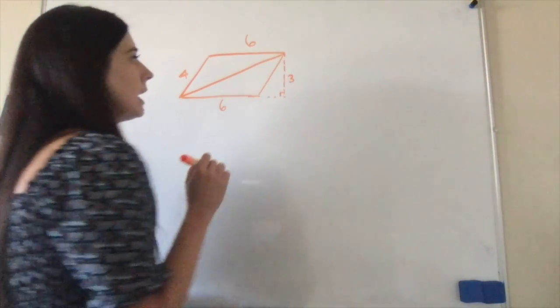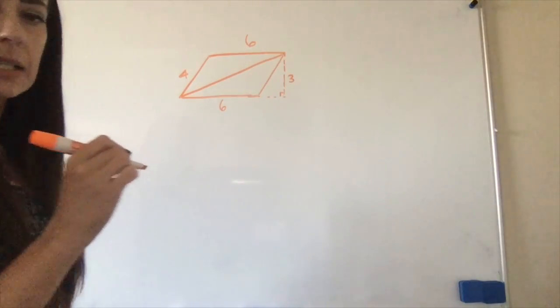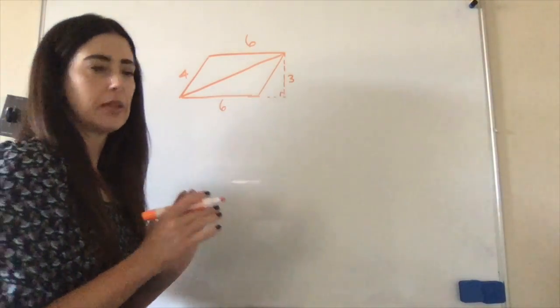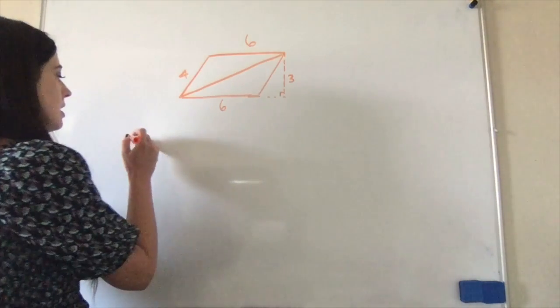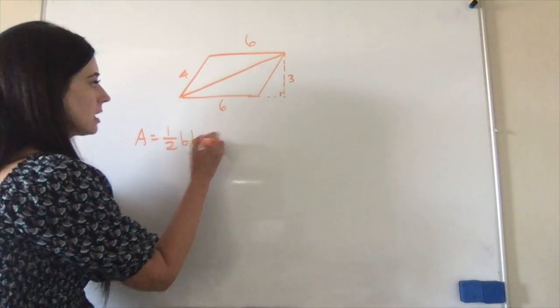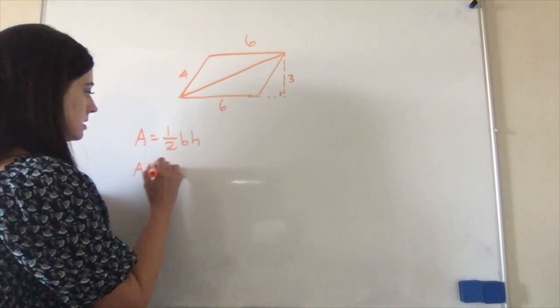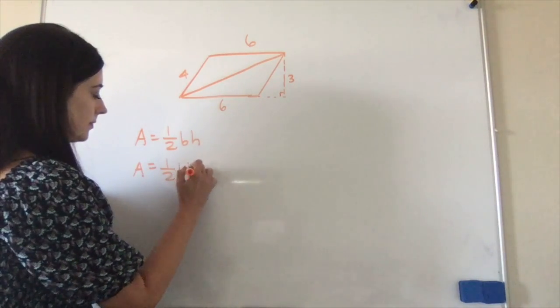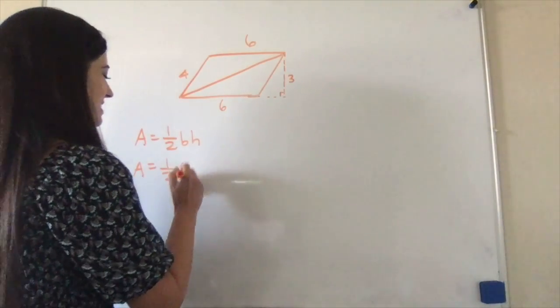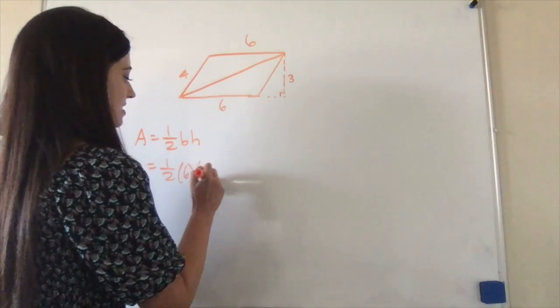Okay, and so we get two triangles, and we're going to find the area of each triangle and then add them together. So to find the area of a triangle, we know it's one-half base times height. Our base is six. Our base is six, and our height is three.